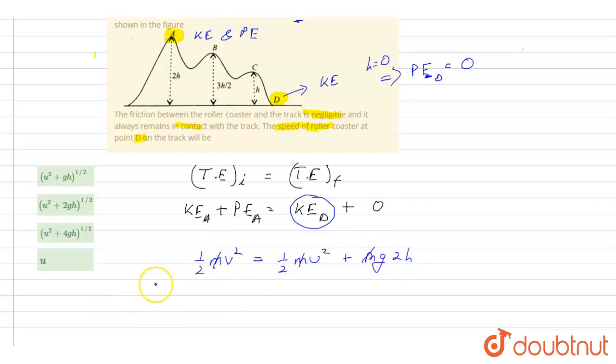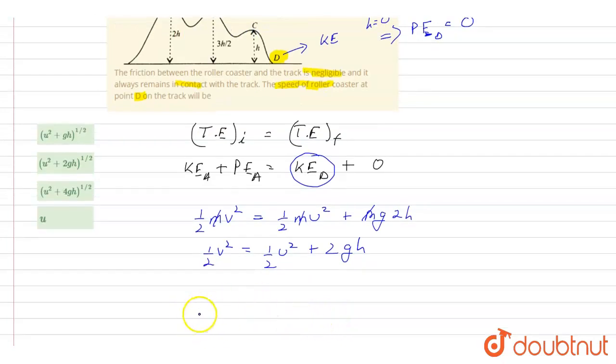Therefore, I will get half V square is equal to half U square plus 2GH. I will multiply this equation by 2, therefore V square is equal to U square plus 4GH.